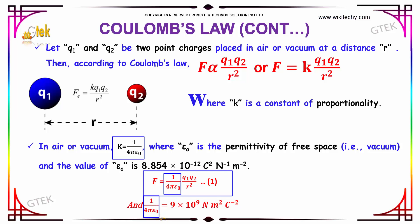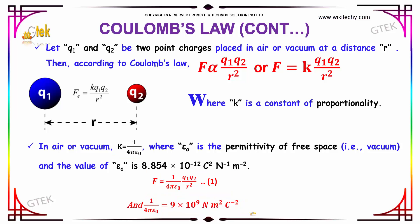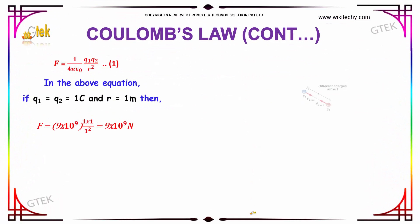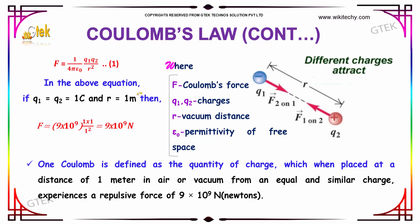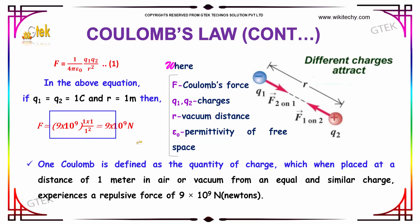We know that the value of 1 divided by 4 pi epsilon 0 is 9 into 10 to the power of 9 N m squared C to the power of minus 2. On substituting the values for charges Q1 into Q2 as 1 C and the value of R as 1 meter, the numerical terms give 1 over 1 squared, which is 1. So the force obtained is 9 into 10 to the power of 9 N.